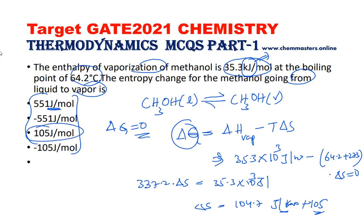The answer is approximately 105 J/mol, and the third option is the correct answer. With this we have completed five questions. We will make a video on the next five questions, which will be posted on our ChemMasters Official YouTube channel community. If you like this video, please click like and share. If you haven't subscribed, do it now for more updates. You can also visit and join chemmasters.online for the best concept-oriented courses. Thank you very much.